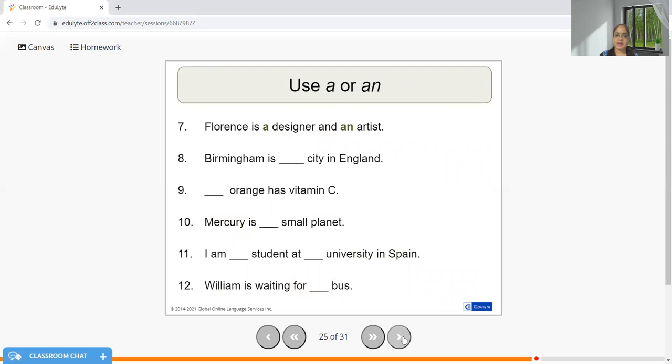Florence is a designer and an artist. Birmingham is a city in England. An orange has vitamin C. Mercury is a small planet. I'm a student at a university in Spain. William is waiting for a bus.